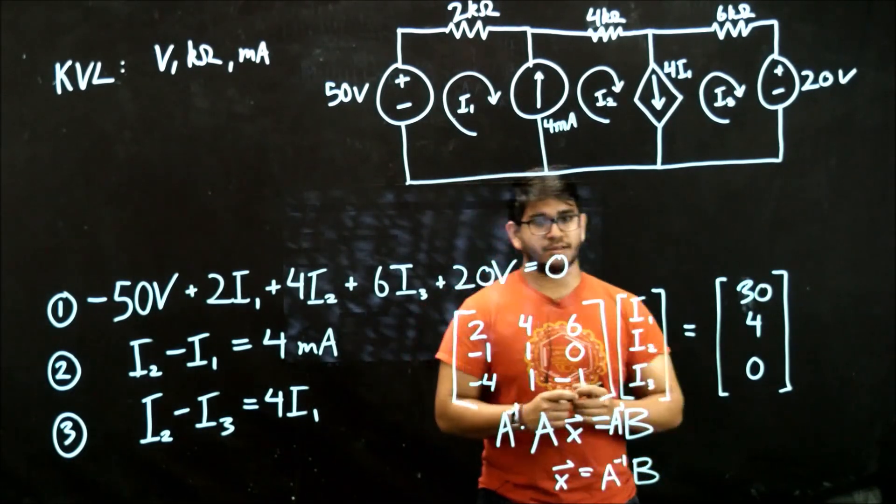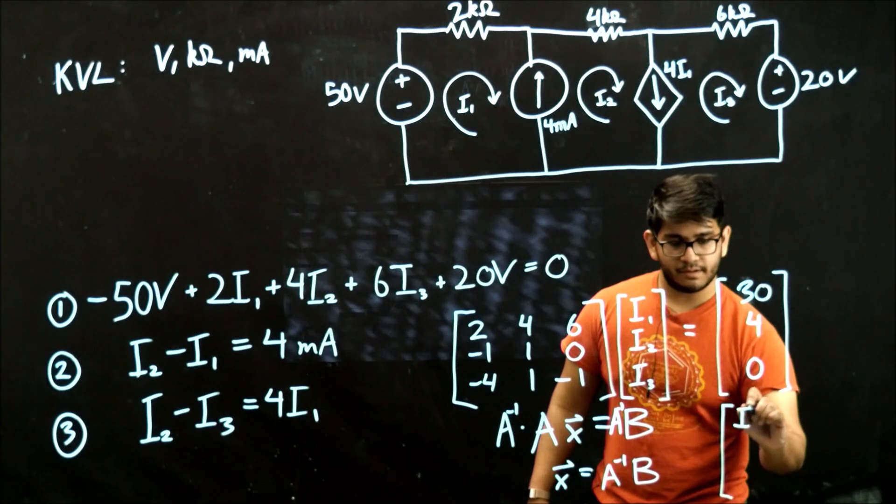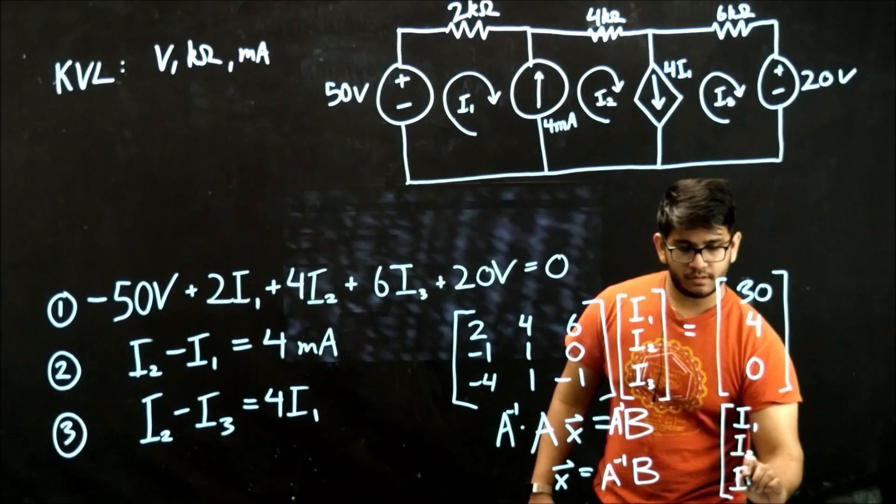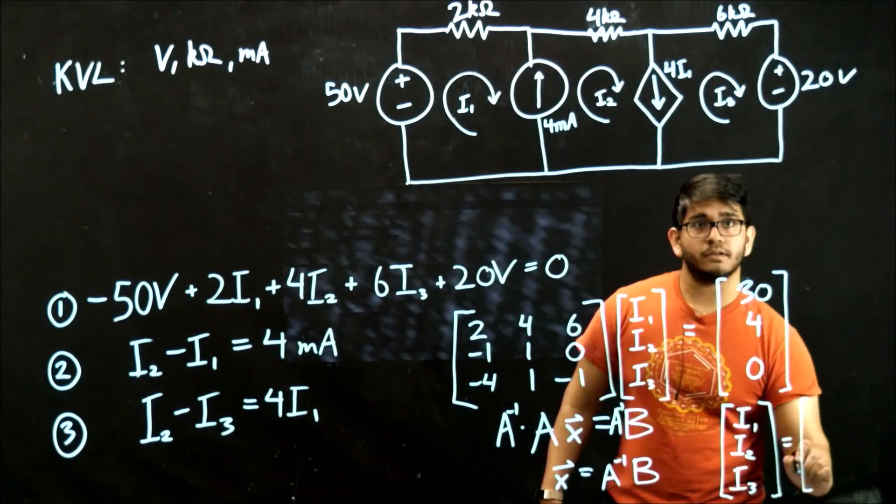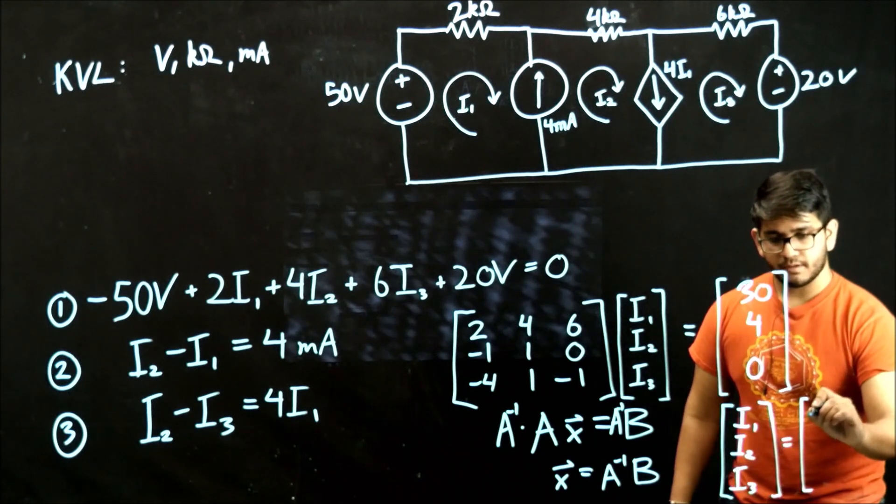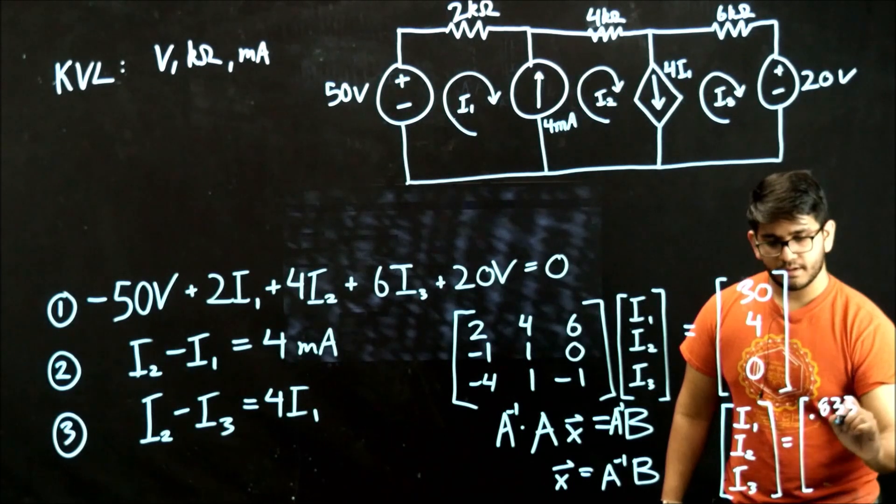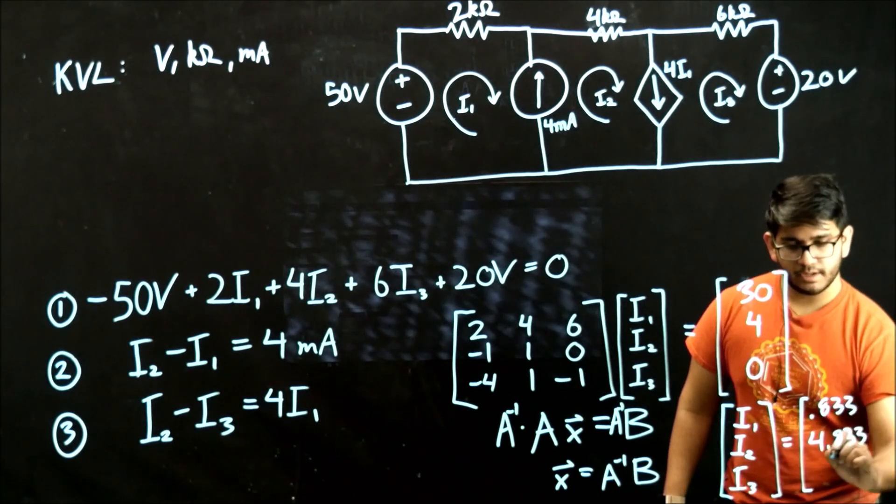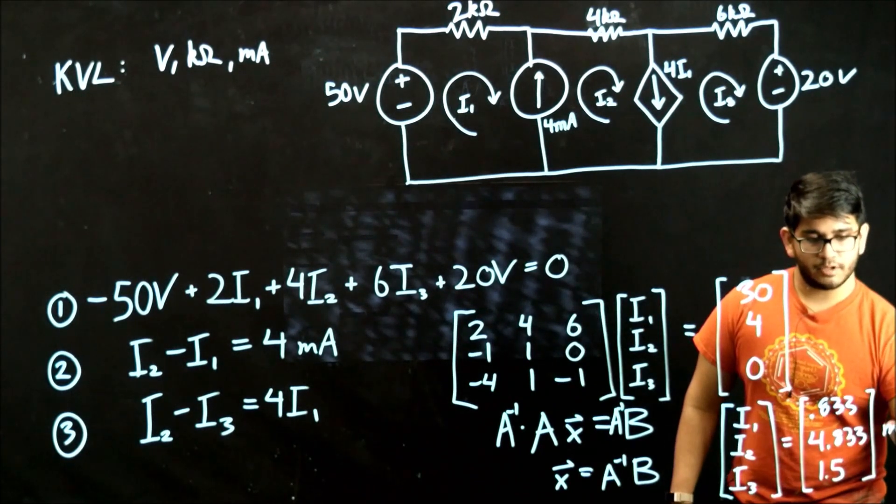And in this case, solving for i1, i2, and i3, you should get 0.833, 4.833, and 1.5, and those are all milliamps.